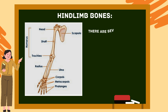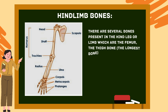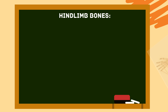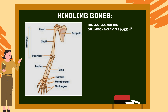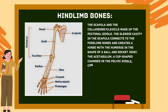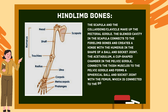The hind limb bones include the femur (the thigh bone and longest bone), tibia and fibula, seven tarsal ankle bones, five metatarsals, and 14 phalanges. The cup-shaped bones on the knees are called the patella. The pectoral girdle is made up of the scapula and clavicle. The glenoid cavity in the scapula connects to the humerus via a ball and socket joint. The acetabulum in the pelvic girdle forms a ball and socket joint with the femur.